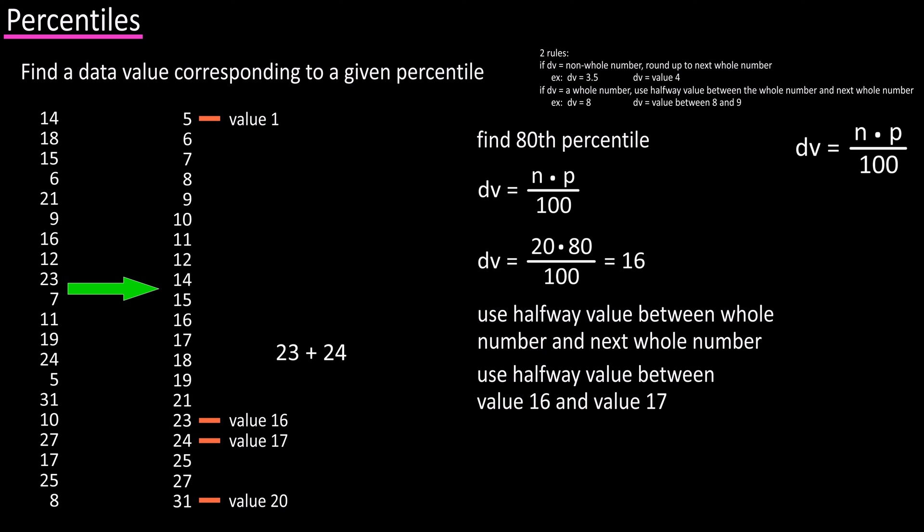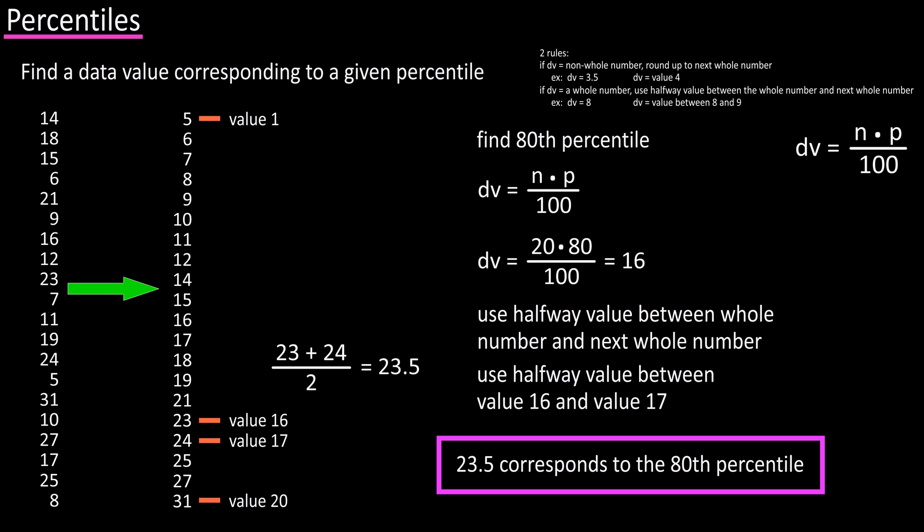Next, we find the halfway value by adding 23 plus 24 and dividing by 2, which is 23.5. So, 23.5 corresponds to the 80th percentile.